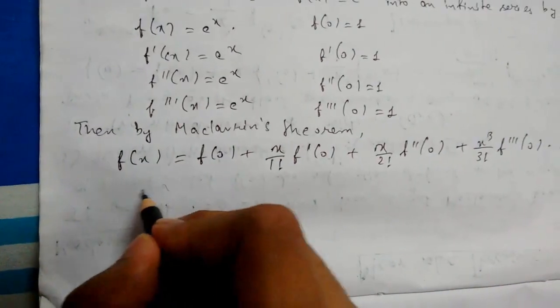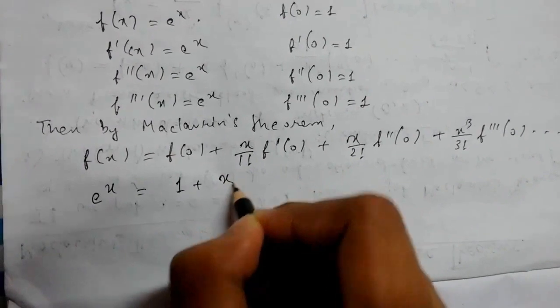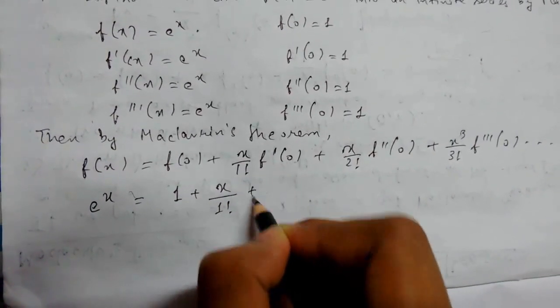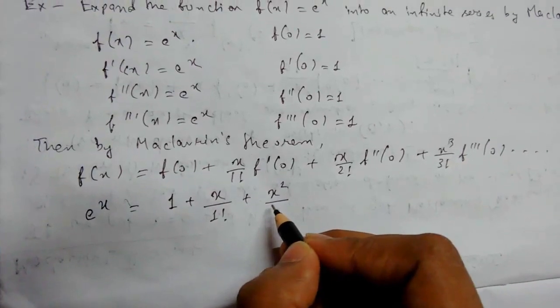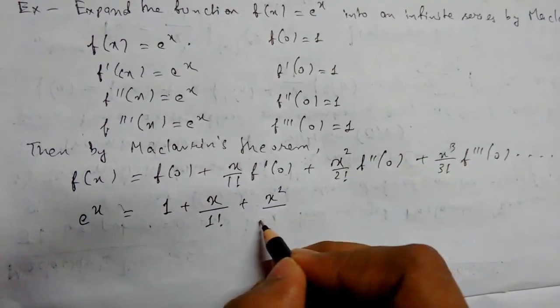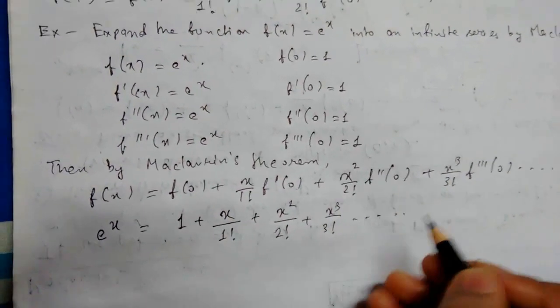on. So e^x = 1 + x/1! + x²/2! + x³/3! + ... and so on.